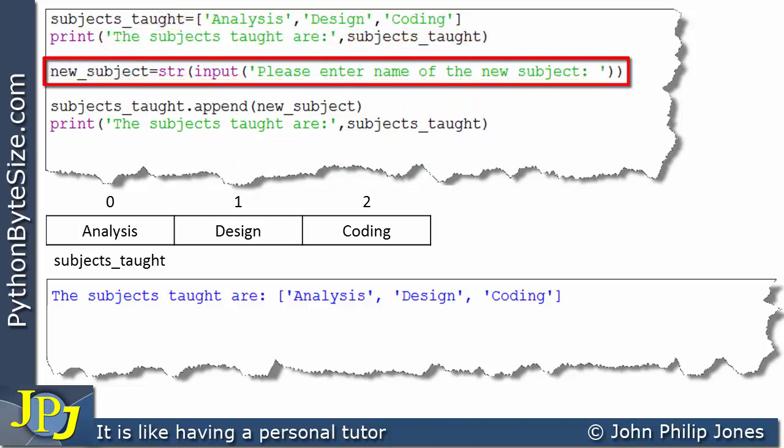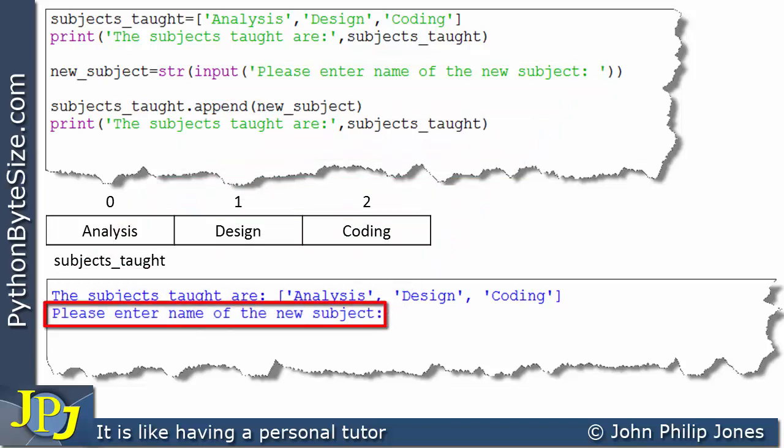This is the next line of the program to execute. And here you can see we have an input statement. And this is going to output this string here. Please enter name of the new subject. We can see that this string appears here. And what is happening now, the program is waiting for the user to enter a new subject to be added to the list. So I'm going to enter discrete maths. And if you're American, that would be discrete math. But here I've typed in discrete maths.